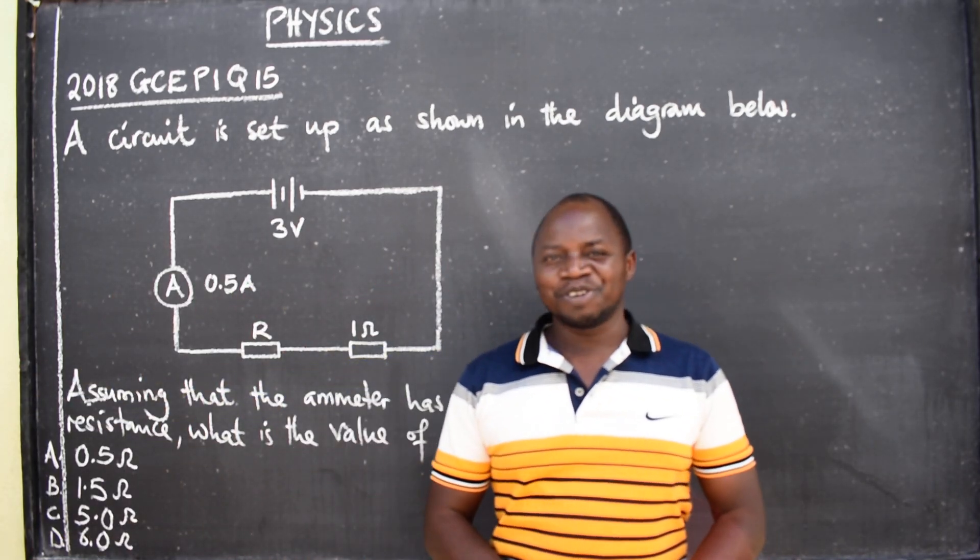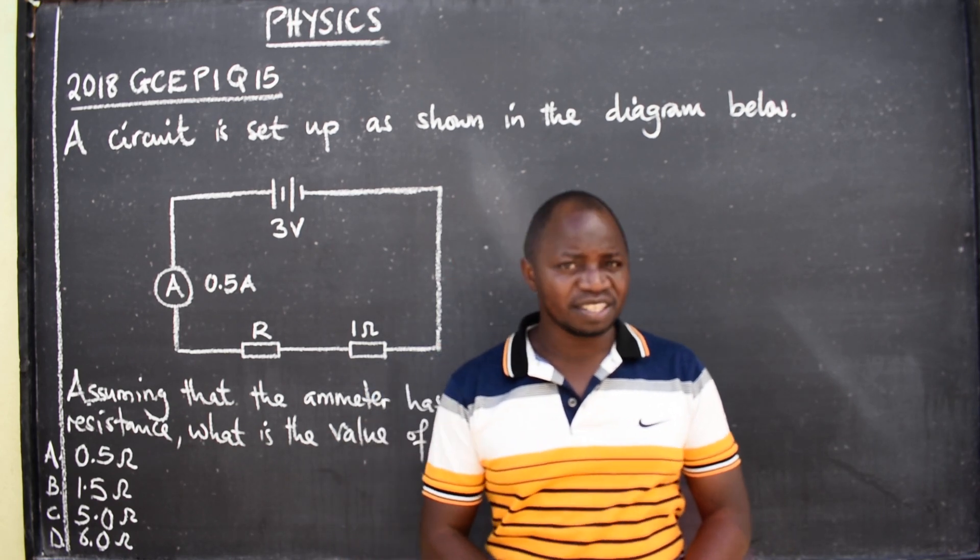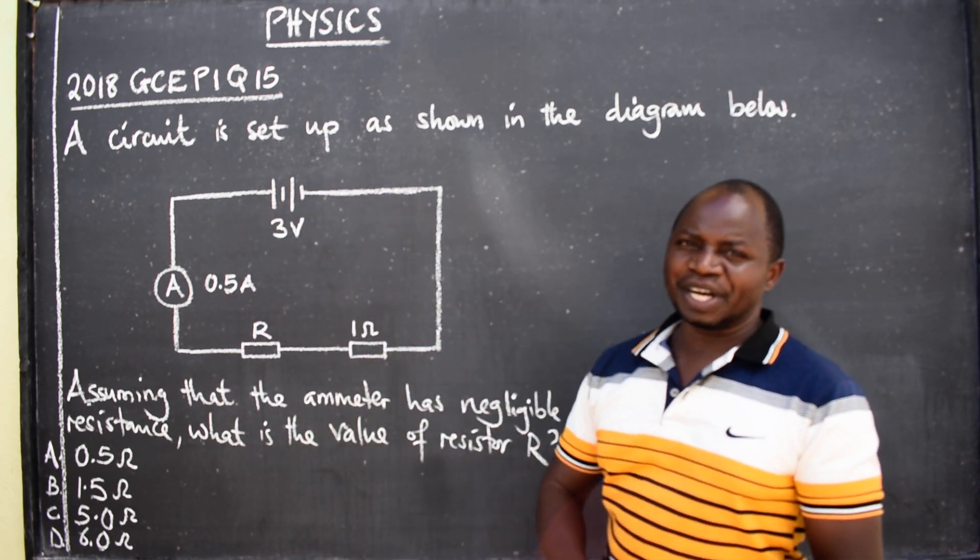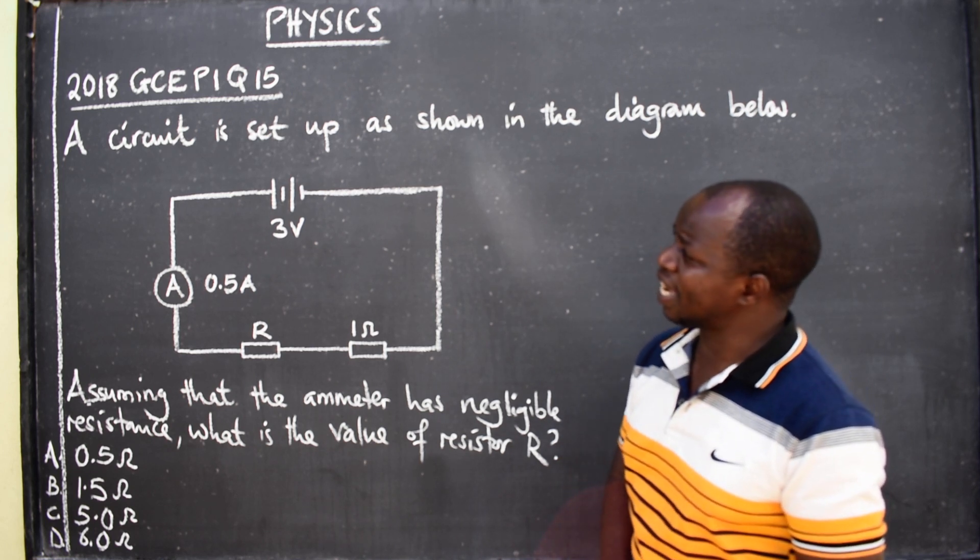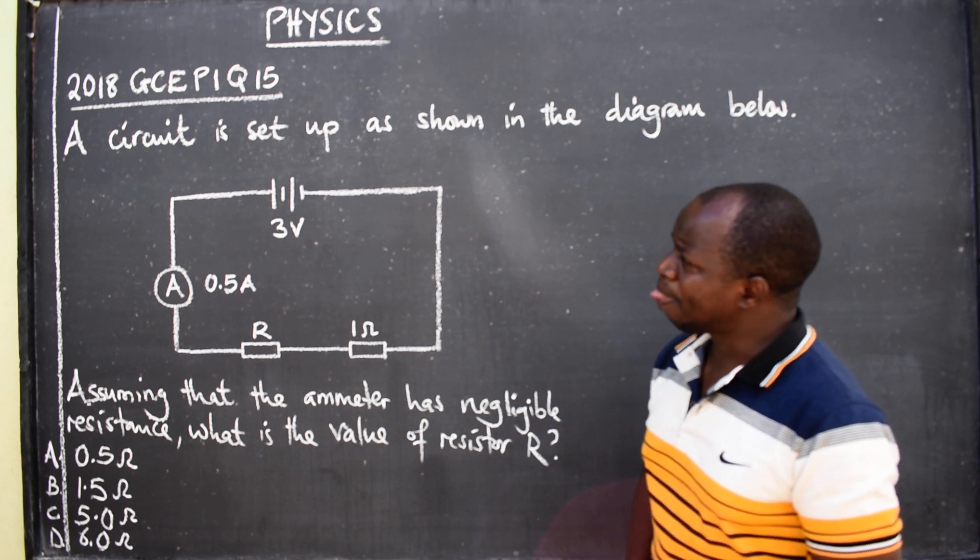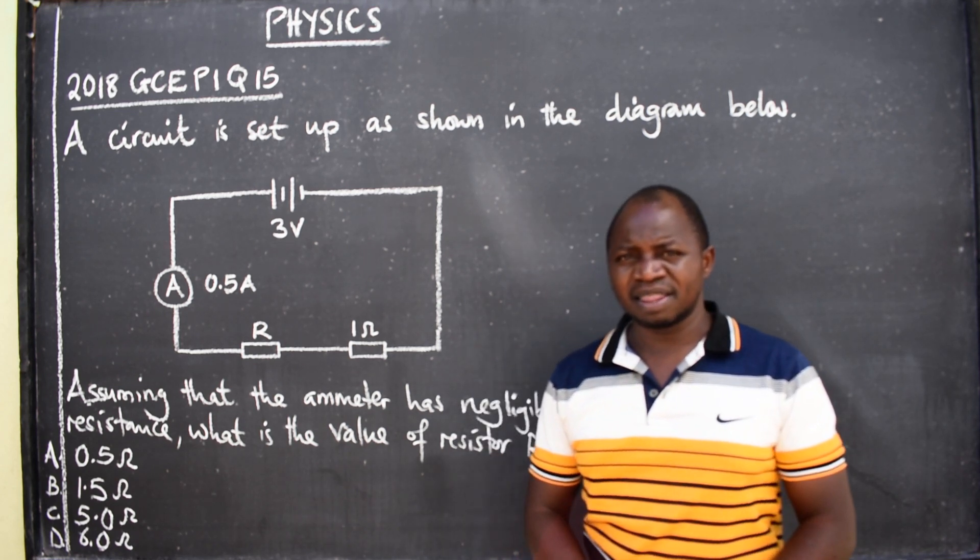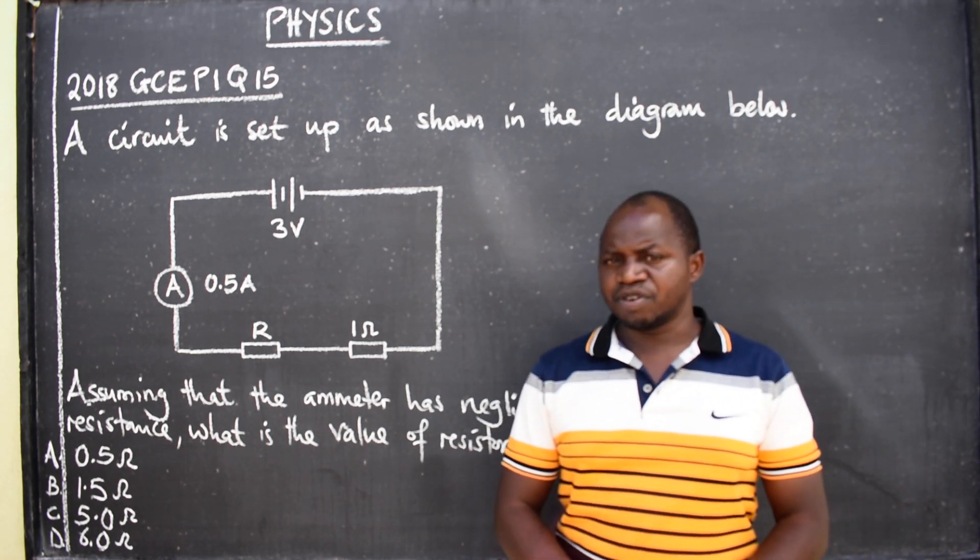Hi! How are you doing? This is physics. In this presentation we want to look at this question from 2018 GCE paper 1. This was question number 15. This is physics 5124.